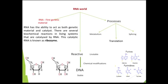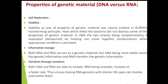RNA is very essential for life processes like metabolism, translation, and splicing. Due to the reactive nature of RNA, it is unstable, but DNA is stable. So we can finally conclude that both DNA and RNA act as genetic material.